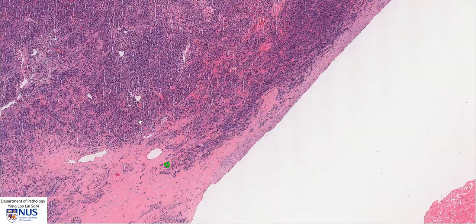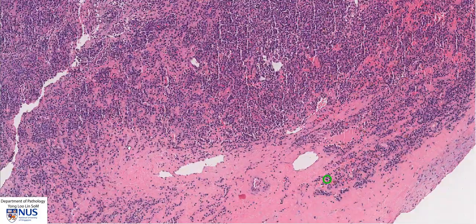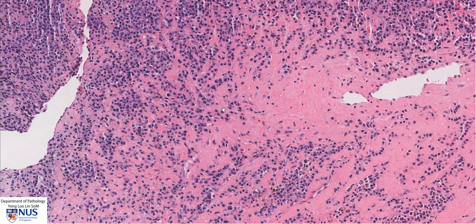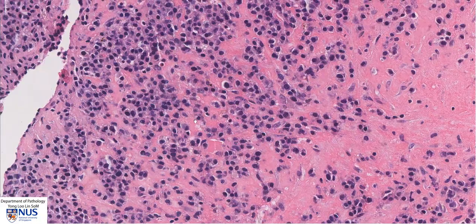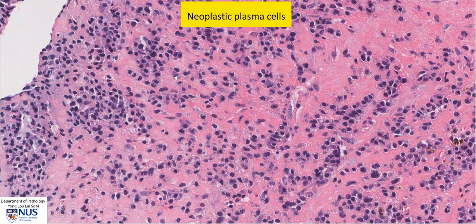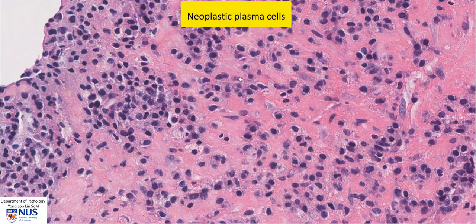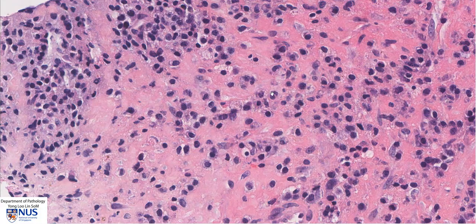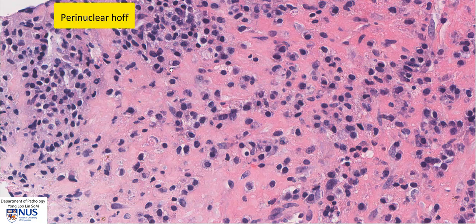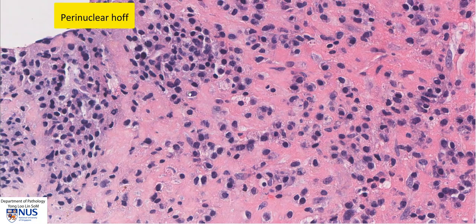Let's have a look at the bluer neoplastic areas. We can actually see that there are numerous neoplastic plasma cells. We can still recognize these cells as being plasmacytic in nature because we can still see that the nucleus is eccentric. There is still a little pale perinuclear hof just next to the nucleus, and this is the outline of the cell.